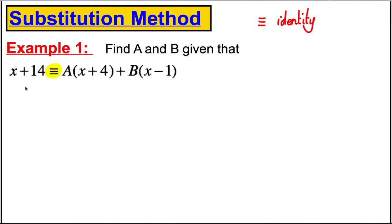So if I'm trying to find A and B, I can actually choose nice values of X and substitute them into both sides to find A and B, to make finding A and B as simple as possible. So what values of X might I choose?